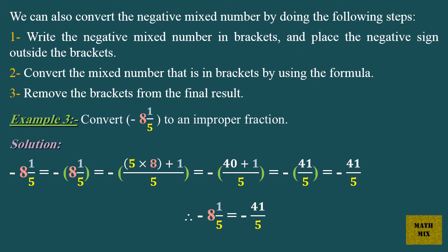Example 3. Convert minus 8 and 1 fifth to an improper fraction. Solution. Minus 8 and 1 fifth equals minus, open bracket, 8 and 1 fifth, close bracket, which equals minus 5 times 8, plus 1, over 5. Which equals minus 40 plus 1, over 5. Which equals minus 41 over 5.